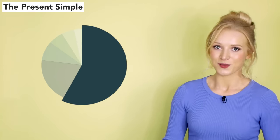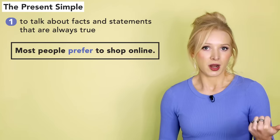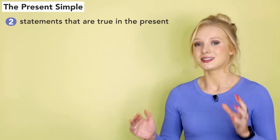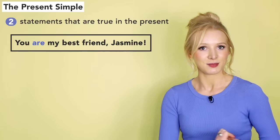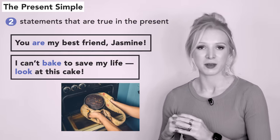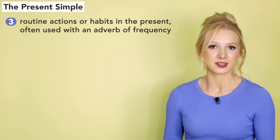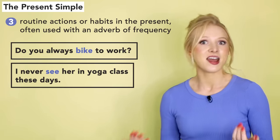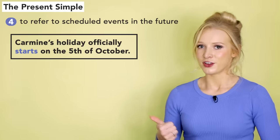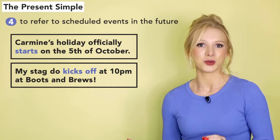Let's look at some of the most common uses of the present simple. Firstly, we use it to talk about facts and statements that are always true: 'Most people prefer to shop online' or 'The supermarket is busy on Saturday mornings.' We also use it for statements that are true in the present: 'You are my best friend, Jasmine' or 'I can't bake to save my life.' And we also use it for routine actions or habits in the present, often used with an adverb of frequency: 'Do you always bike to work?' or 'I never see her in yoga class these days.' We use it to refer to scheduled events in the future: 'Carmine's holiday officially starts on the 5th of October.'